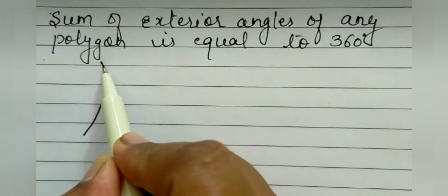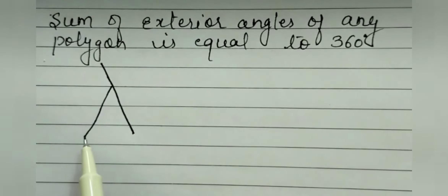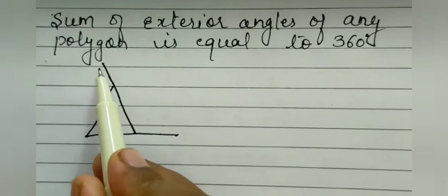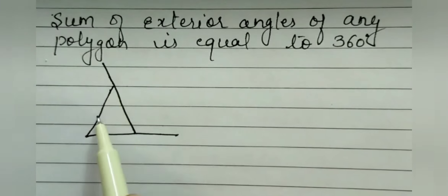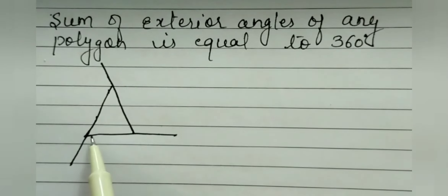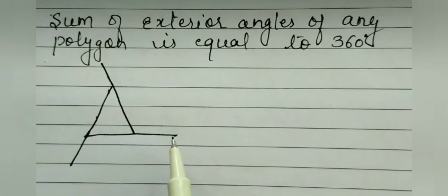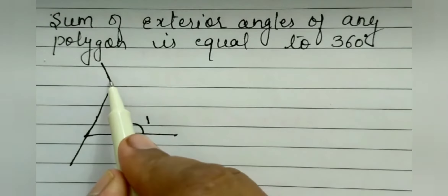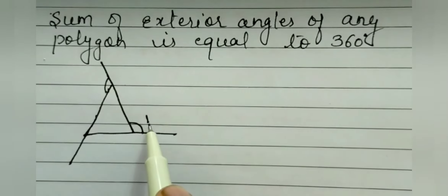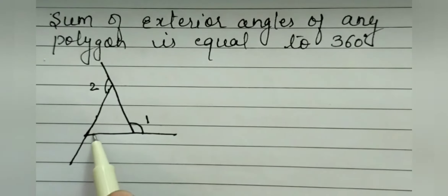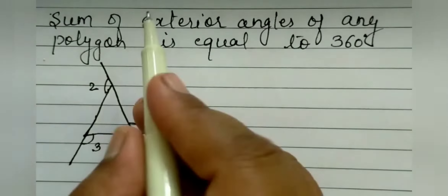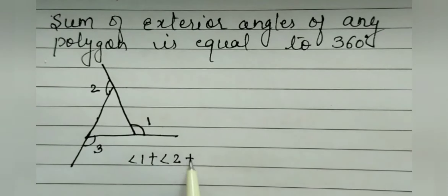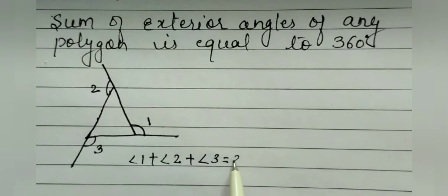Here I am making one triangle and extending the sides in the same order. You can see that each side has been extended, giving us three exterior angles of the triangle. I am naming them angle 1, angle 2, and angle 3. So according to this property, angle 1 plus angle 2 plus angle 3 is equal to 360 degrees.